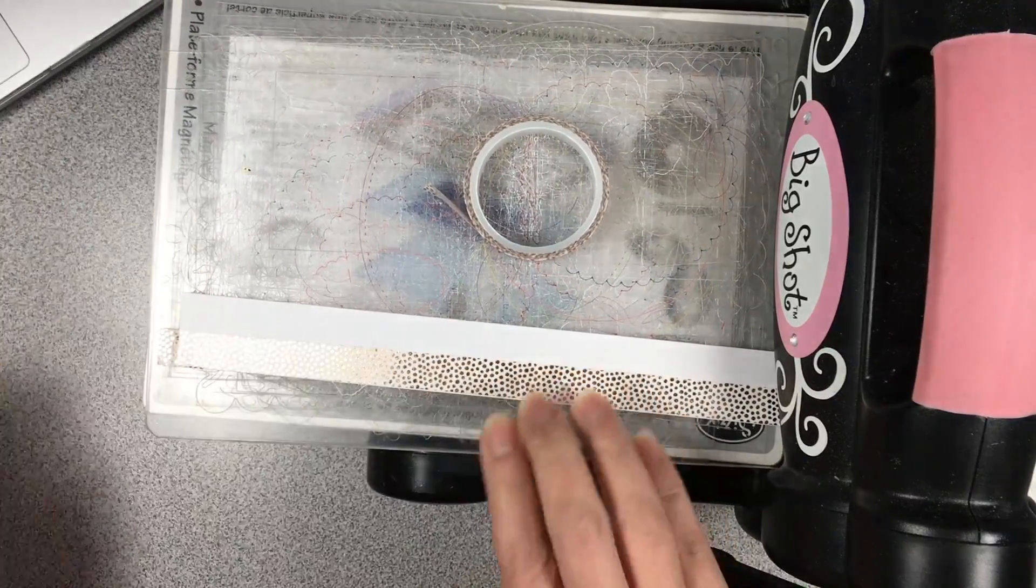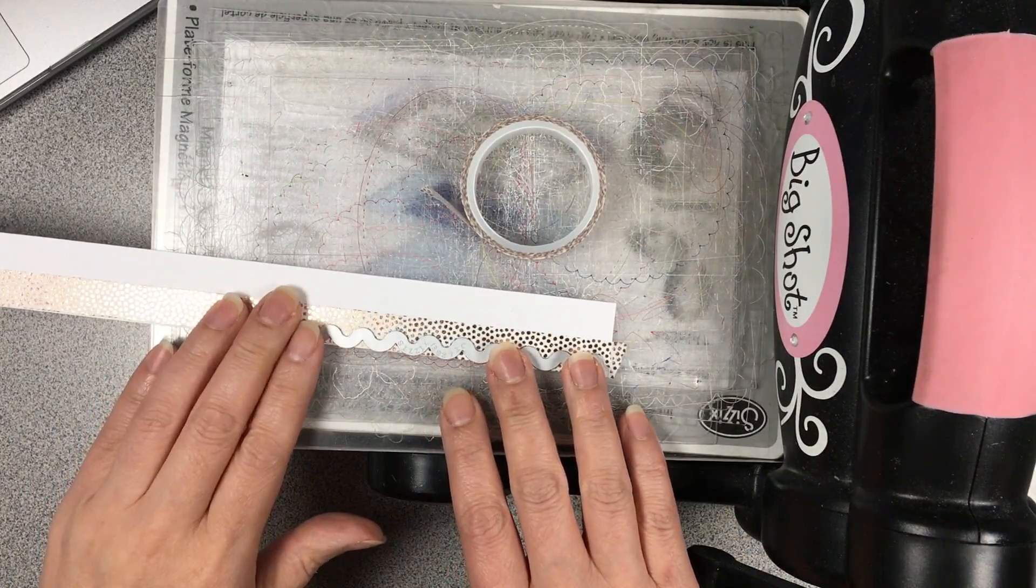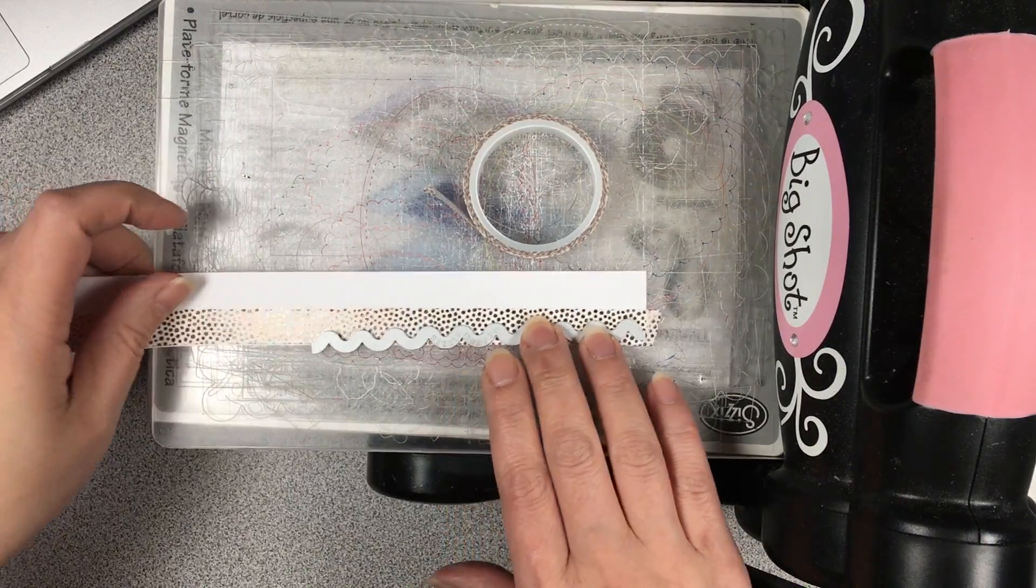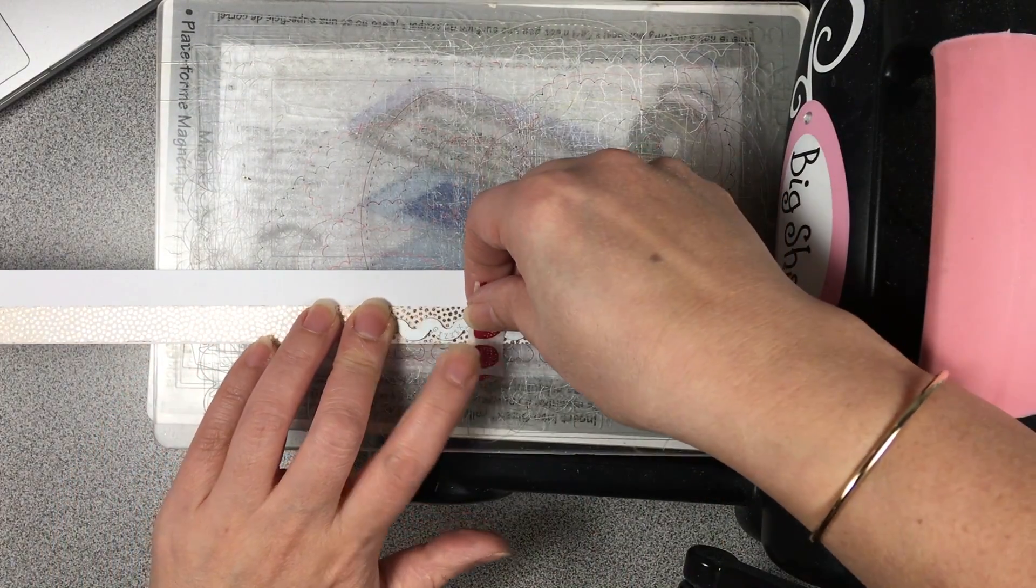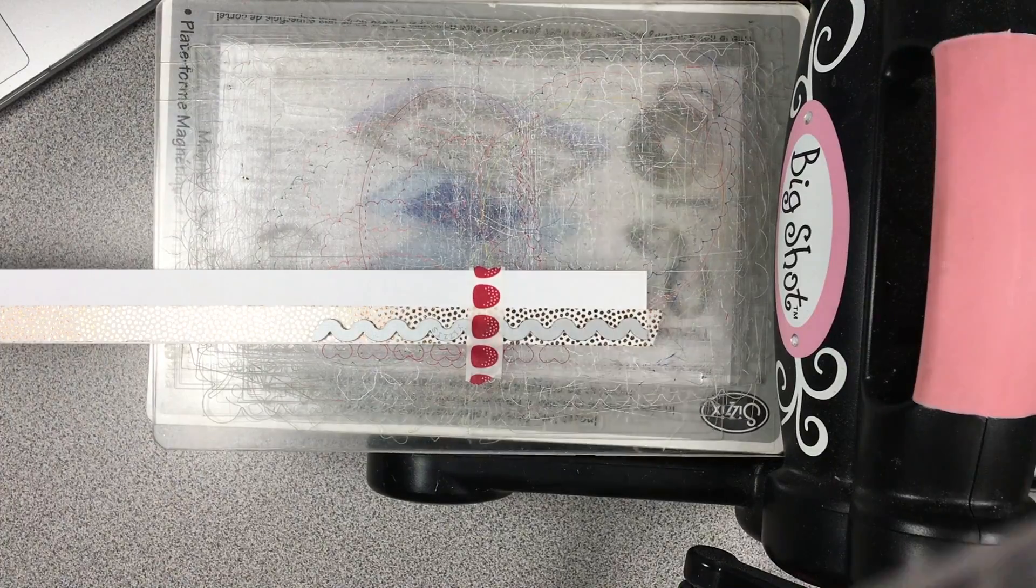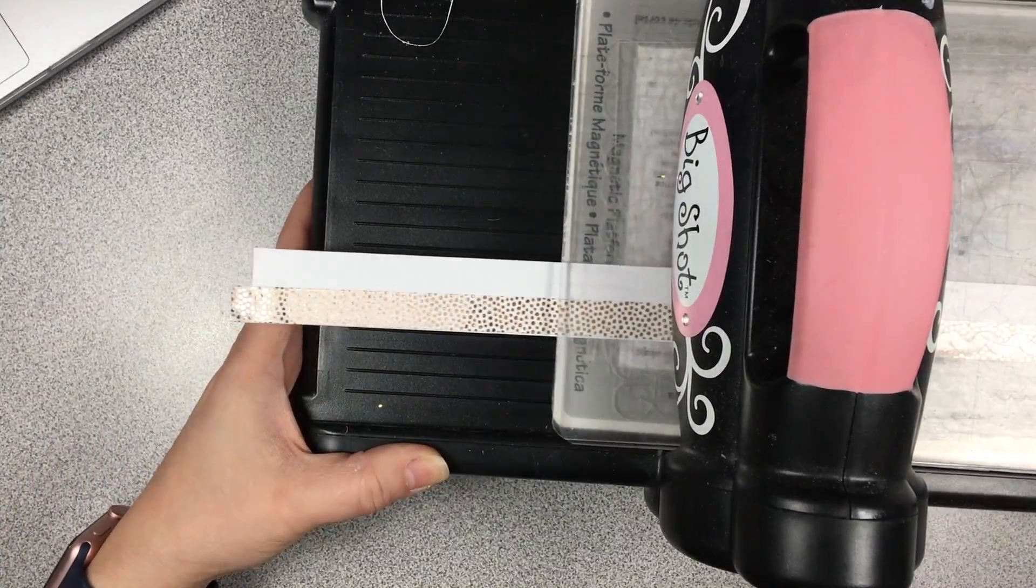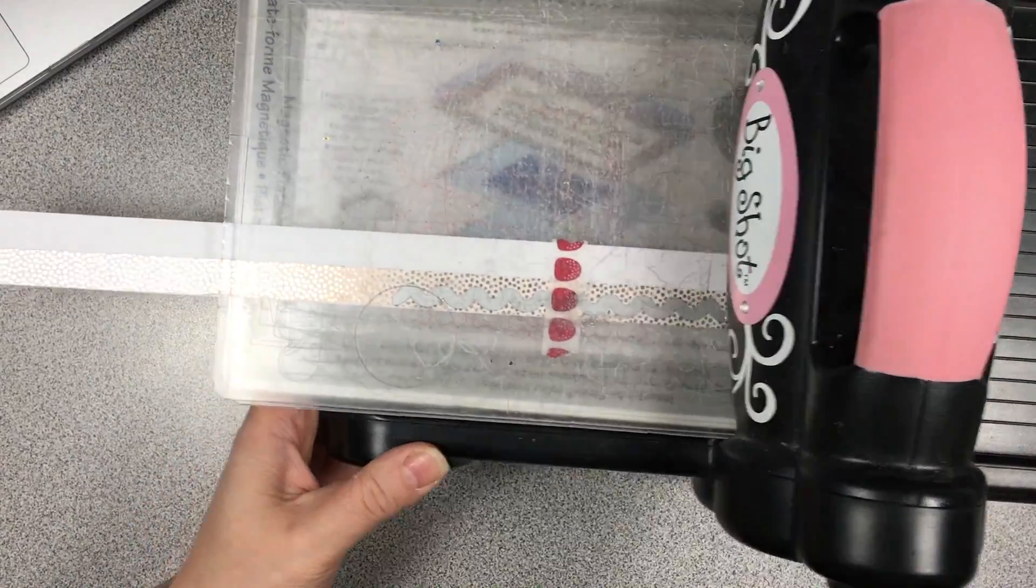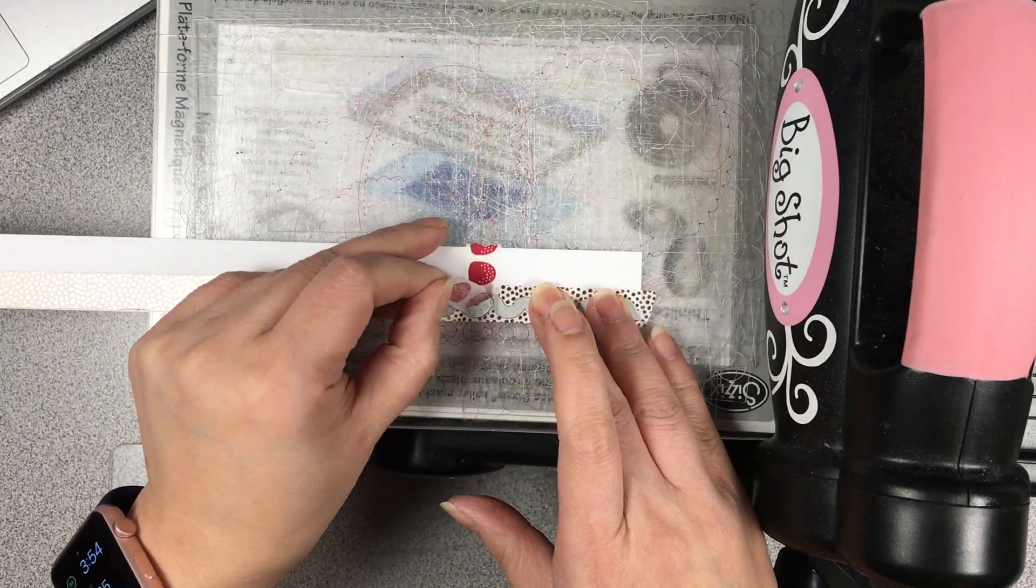I'm using the copper foil washi tape from the Affectionately Yours washi tape set and I've laid it on a one inch by eleven inch piece of cardstock. We're going to use this die from the Cutie Pie Framelet die set to create a scallop border all the way across, and this is going to be icing for the cake.